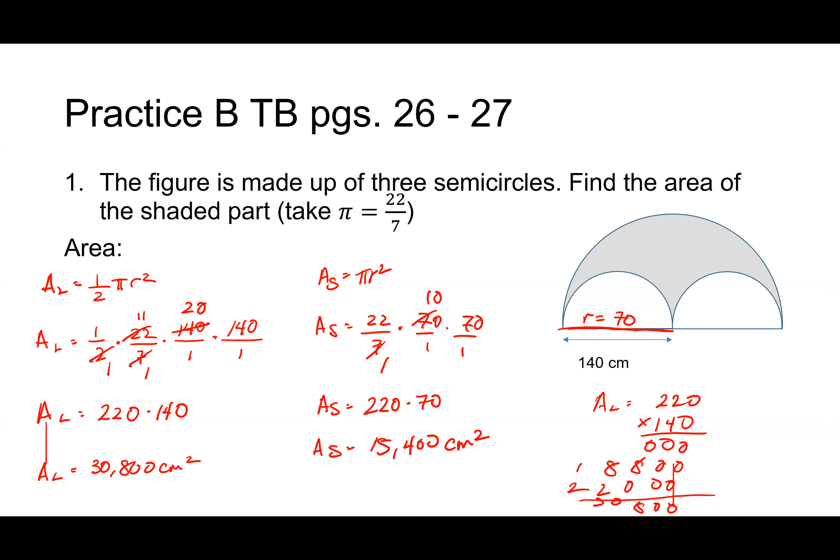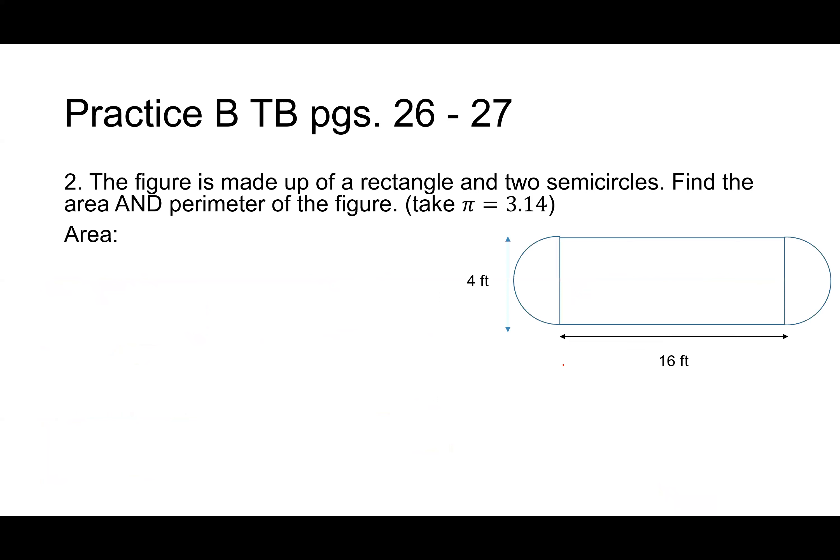What'd you get for the final answer then? We have to subtract, bud. So we have to subtract 15,400 from 30,800. And conveniently, remember that 15,400 is half of the other one. So what's the answer, Kinsey? 15,400. Yeah, exactly. The total area is going to be 15,400 centimeters squared. Good job.